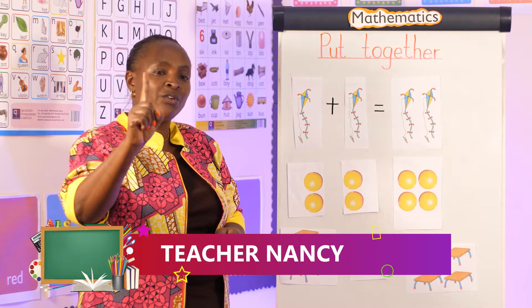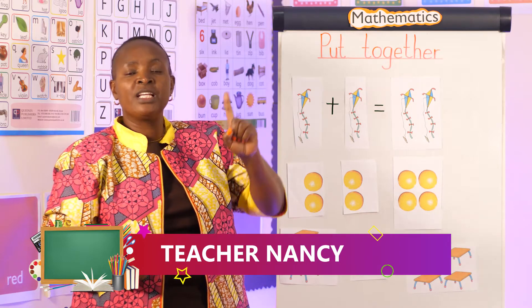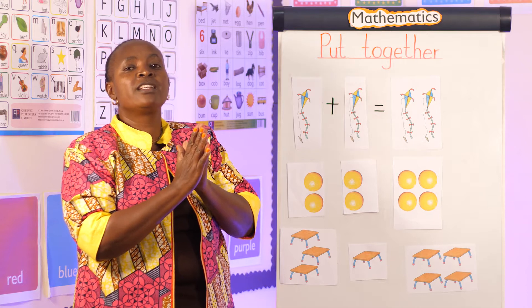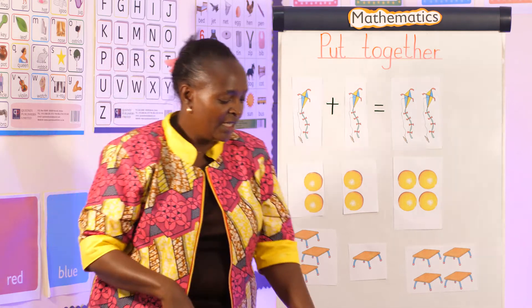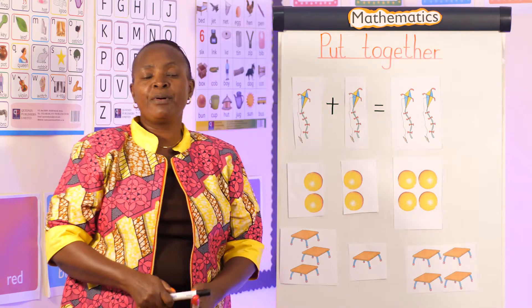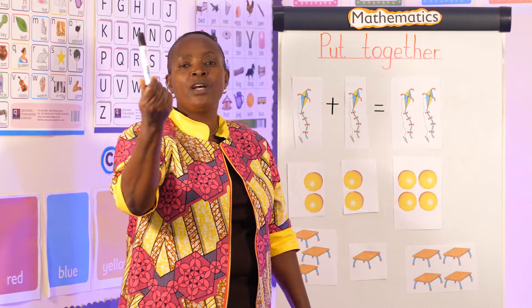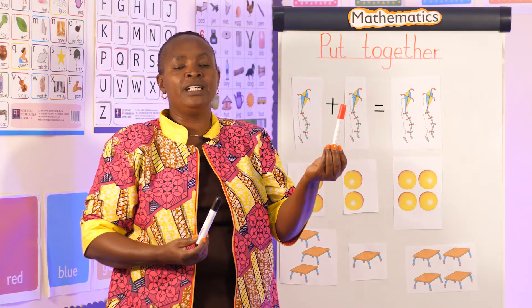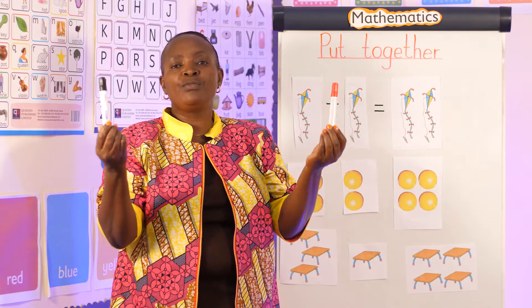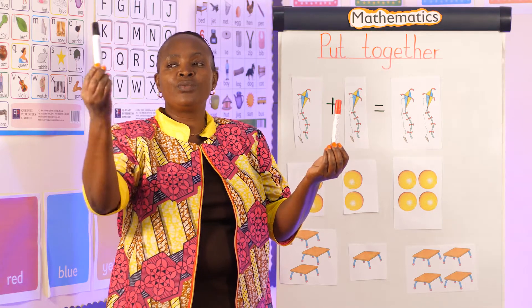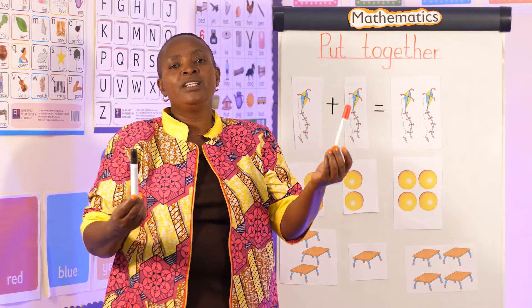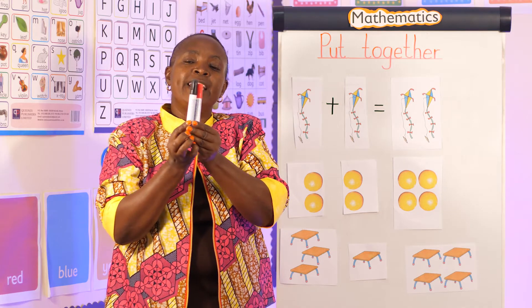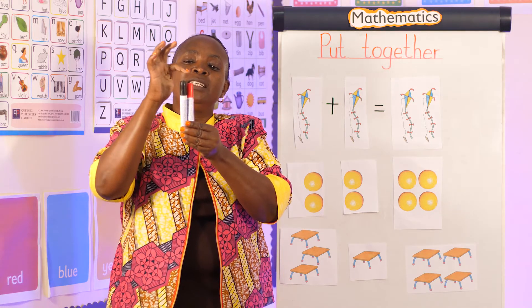We take one object and another object and put them together to get the sum. For example, I have a pen here — one — and I now have another one here, so I have these two pens.